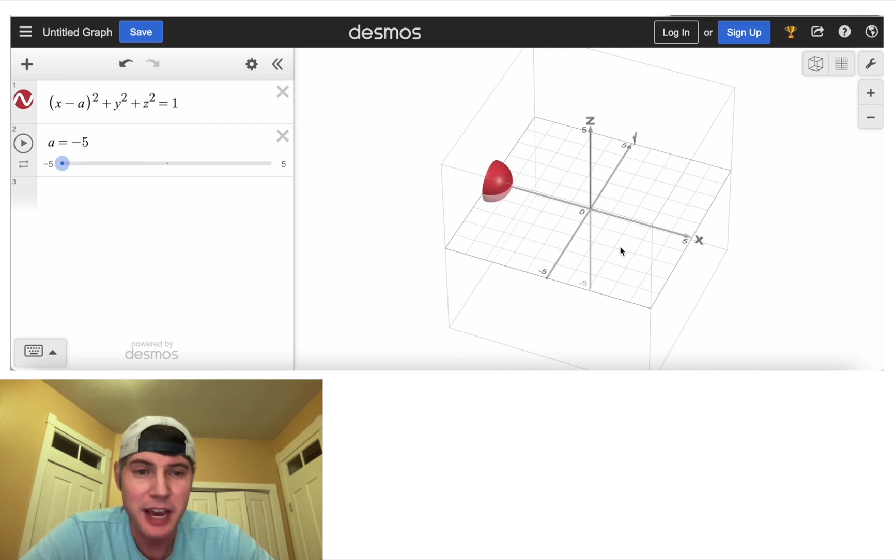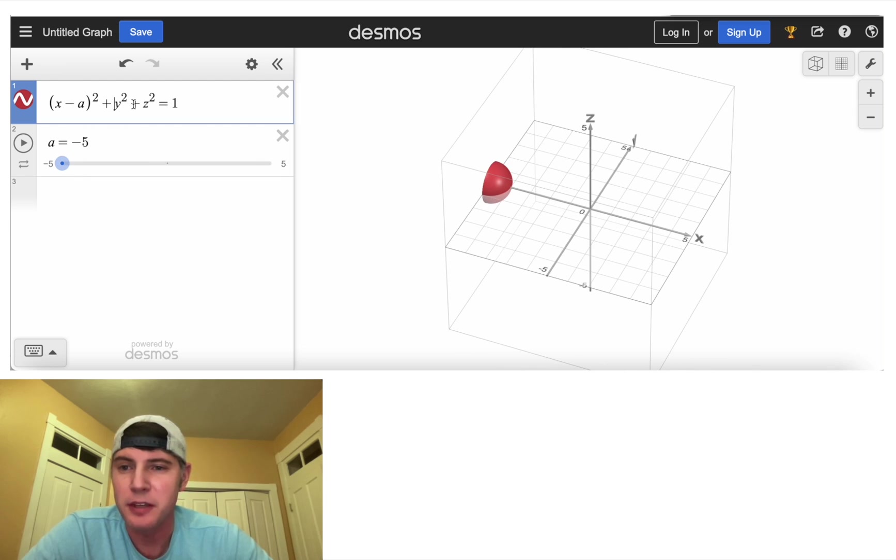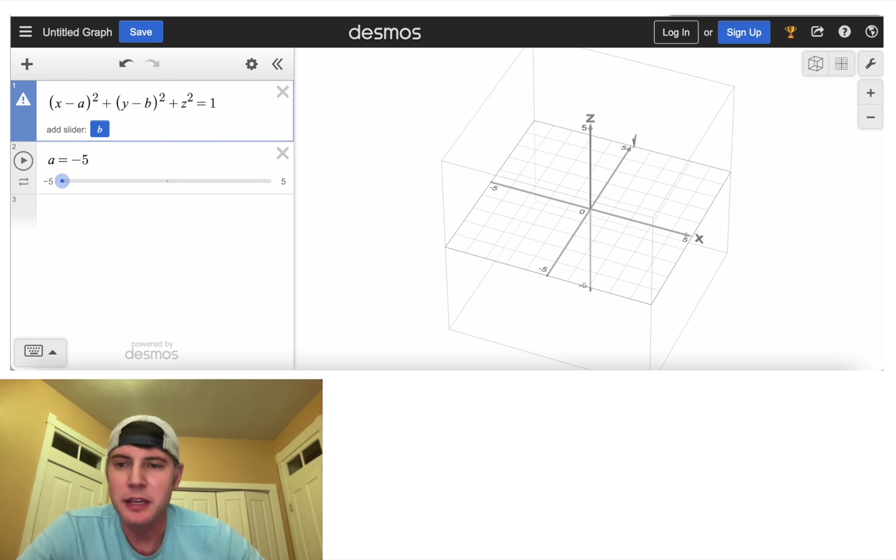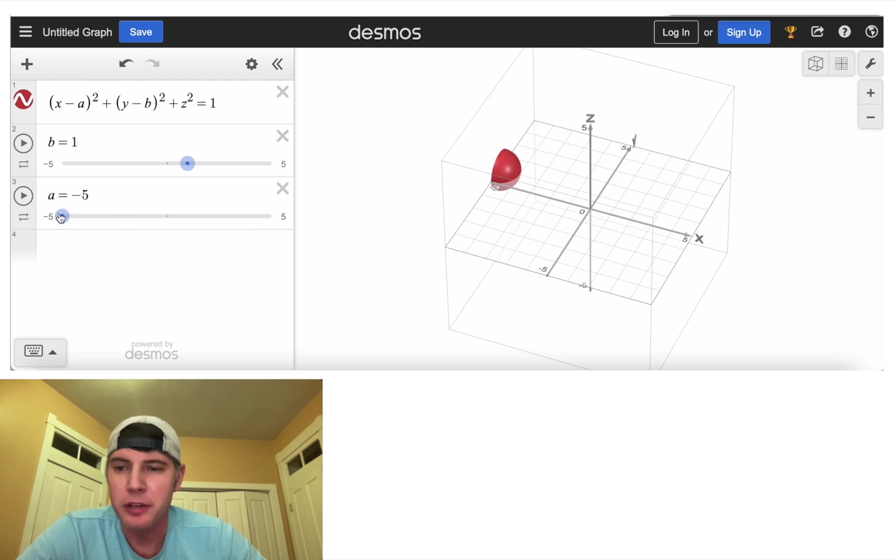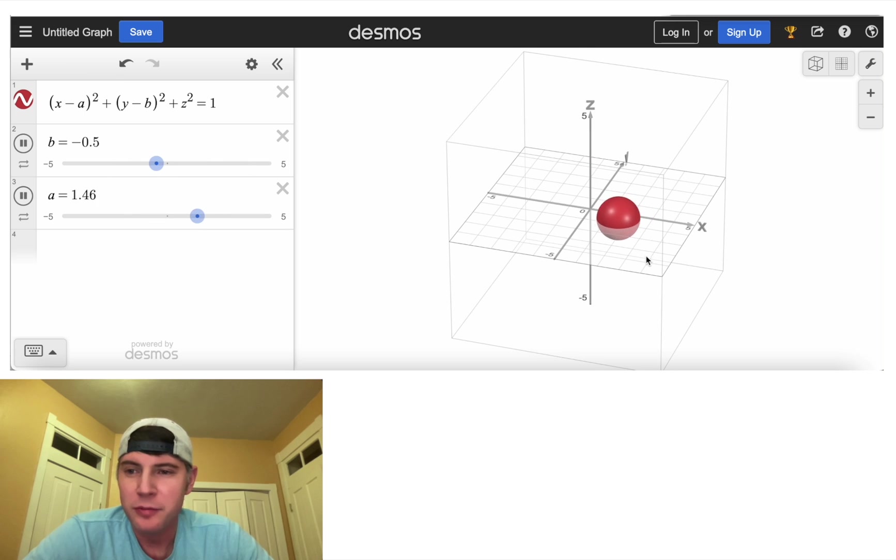And then if we want to go up and down along the Y axis, you do the same thing for Y. Give it a minus b. Add the slider. And now we can move up and down as well. So we got left and right and up and down. And then if we hit play on these, we can actually have it bounce around.